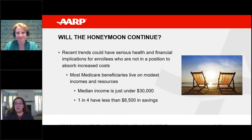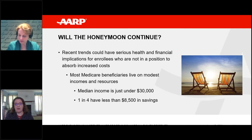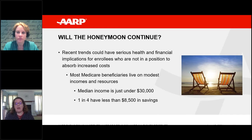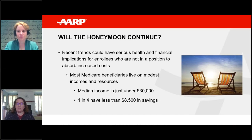The short answer is no, not everyone who should be getting it is getting it. They have pretty strict eligibility criteria — you need to have an income less than 150% of poverty, which is around $19,000 for individuals and about $26,000 for married couples, and very modest assets: less than $14,000 for individuals and less than $30,000 for couples. A lot of people aren't necessarily aware of the program, which is another problem. So it's definitely something people are thinking about — how to make sure people are aware of it and know how to apply. It's an underutilized asset.